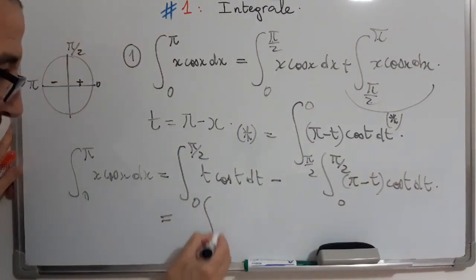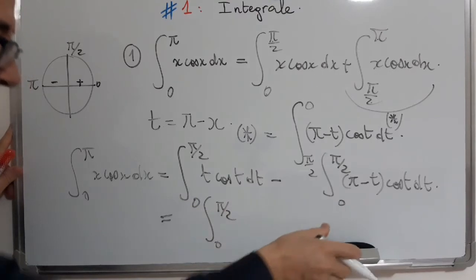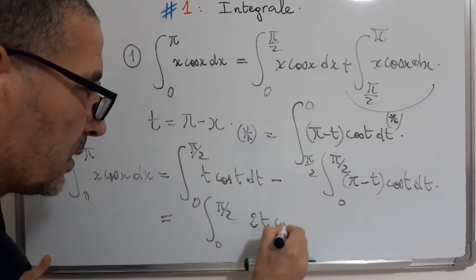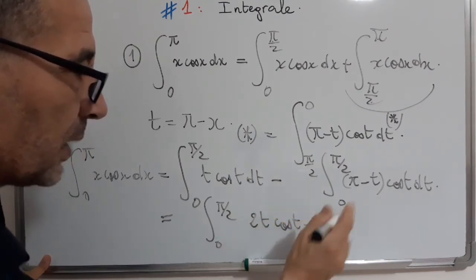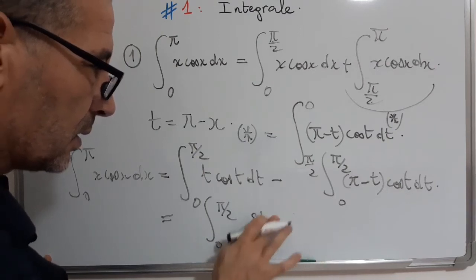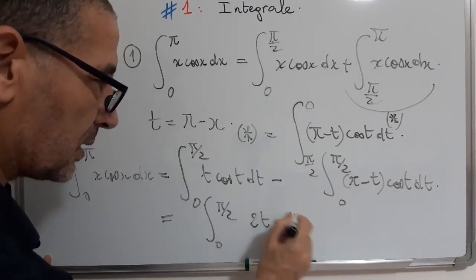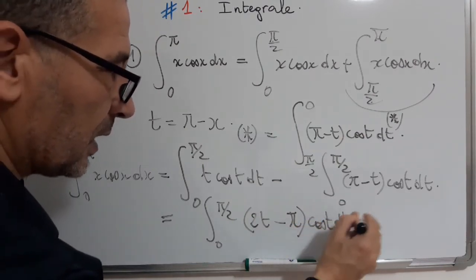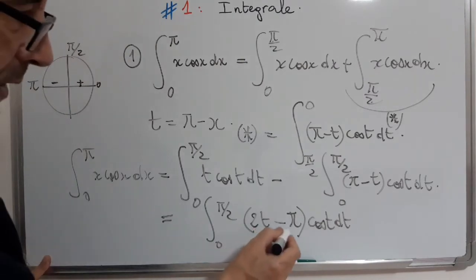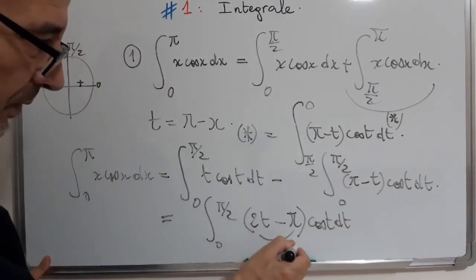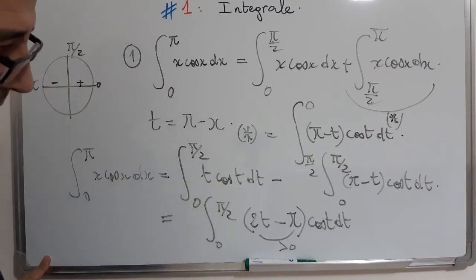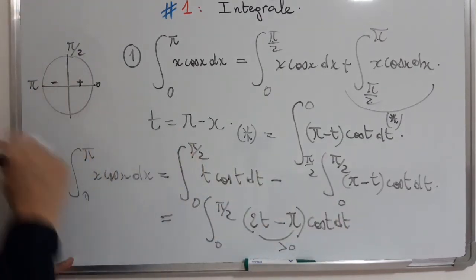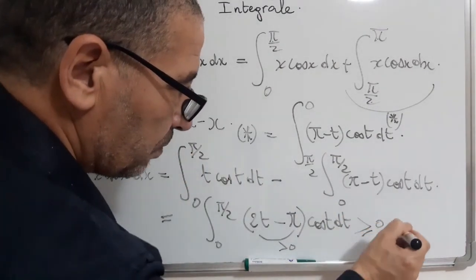Finally, this equals 0 to π over 2. And quickly, one finds 2t cos t minus π cos t, which we can write in the following shortened form. Now, the problem is solved. This quantity is positive because we have t in the interval 0 to π over 2, and at the same time cos t is positive. So, this integral will be positive.